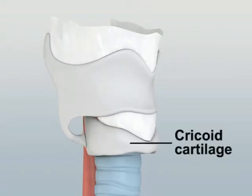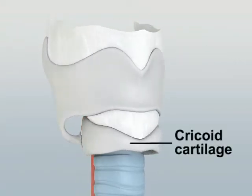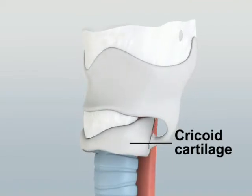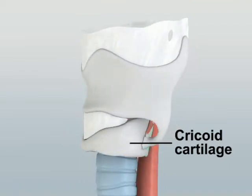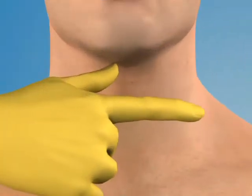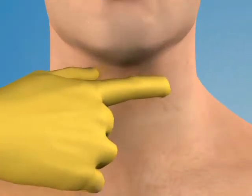The cricoid cartilage forms the inferior border of the cricothyroid membrane and is the only completely circumferential cartilaginous structure of the larynx. The tracheal rings descend inferiorly to the cricoid cartilage.